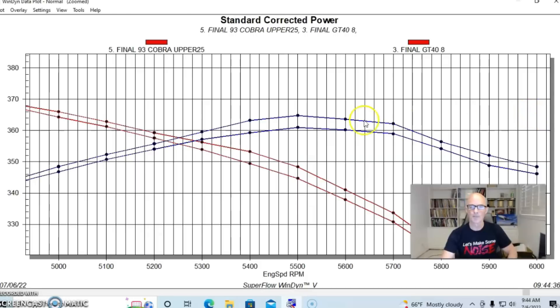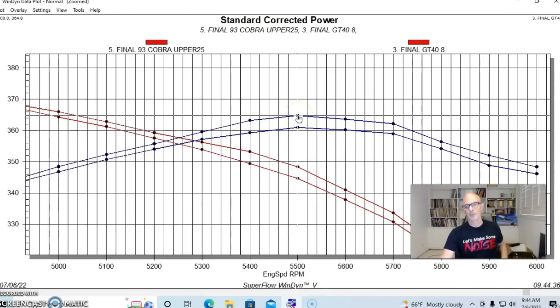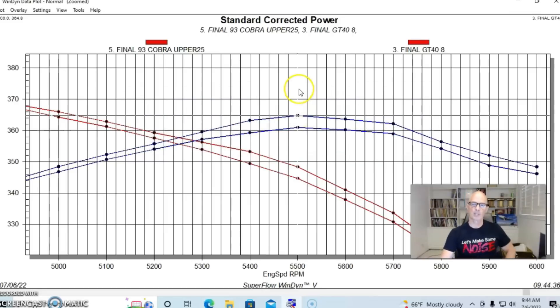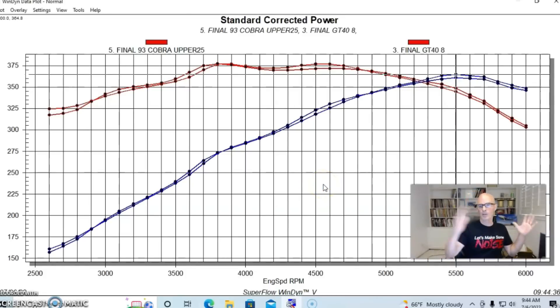In fact, if we go ahead and zoom in here, we can see the difference. 361 versus 364.8. So maybe four or five horsepower there. And we're going to talk a little bit about that at the end. But not surprisingly, very, very similar power curves and torque curves, because the intake manifolds themselves are so similar.